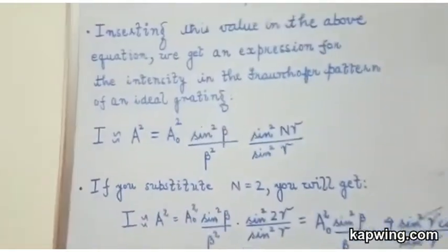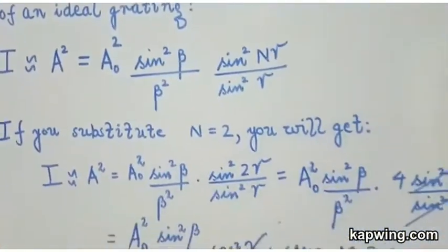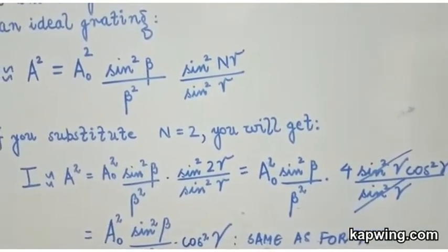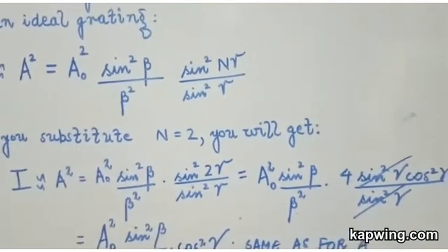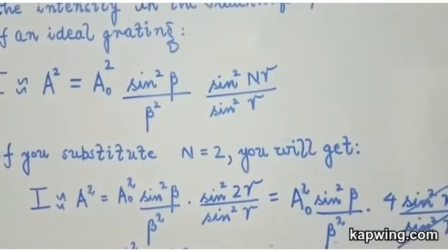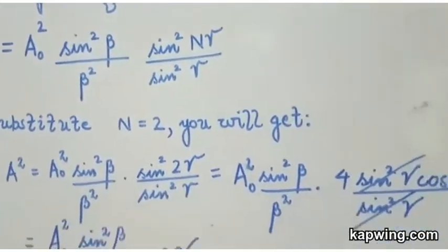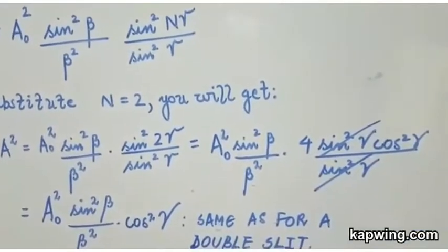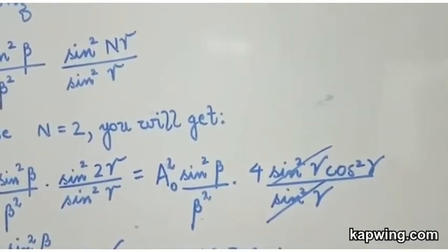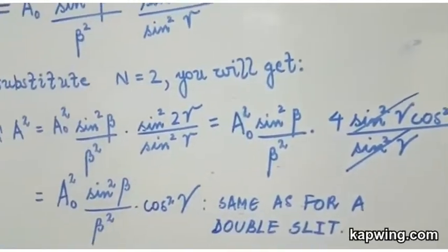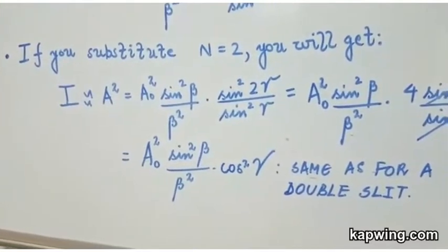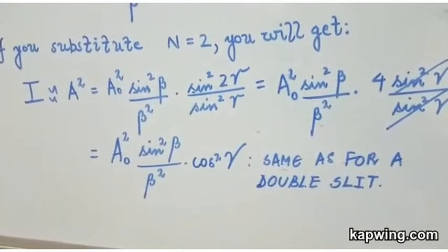Now n represents the number of slits. So if you substitute n equal to 2 you are going to get I is equal to A0 square sin square beta upon beta square sin square 2 gamma upon sin square gamma. You know the expression for sin 2 gamma will be 2 sin gamma cos gamma. Since this is sin square we write it equal to A0 square sin square beta upon beta square 4 sin square gamma cos square gamma upon sin square gamma. The sin square gamma cancels both in the numerator and denominator and you get I is equal to A0 square sin square beta upon beta square cos square gamma. This is an identical expression as for a double slit.